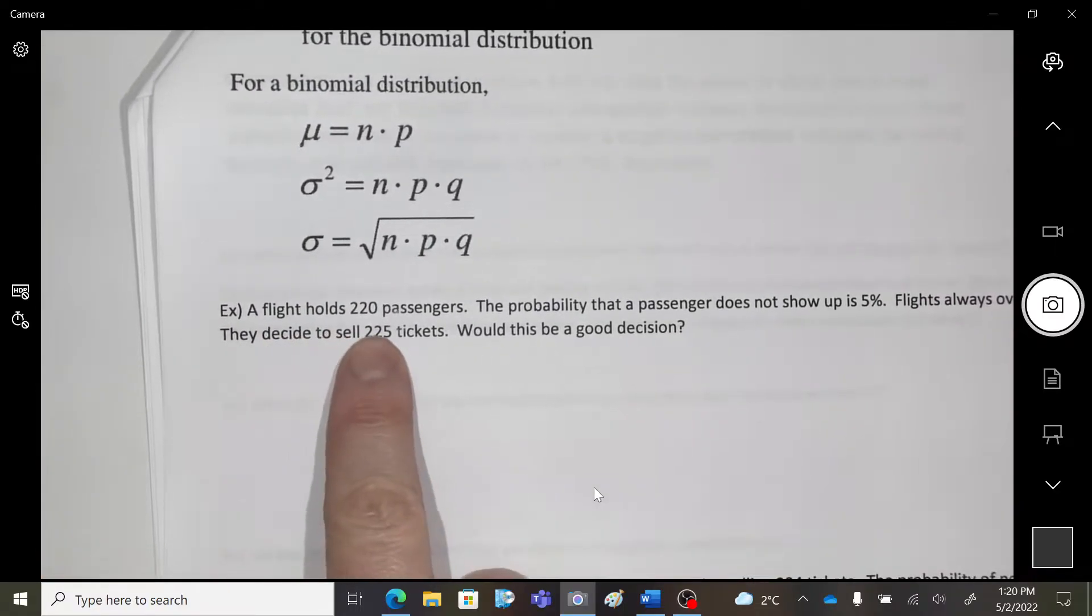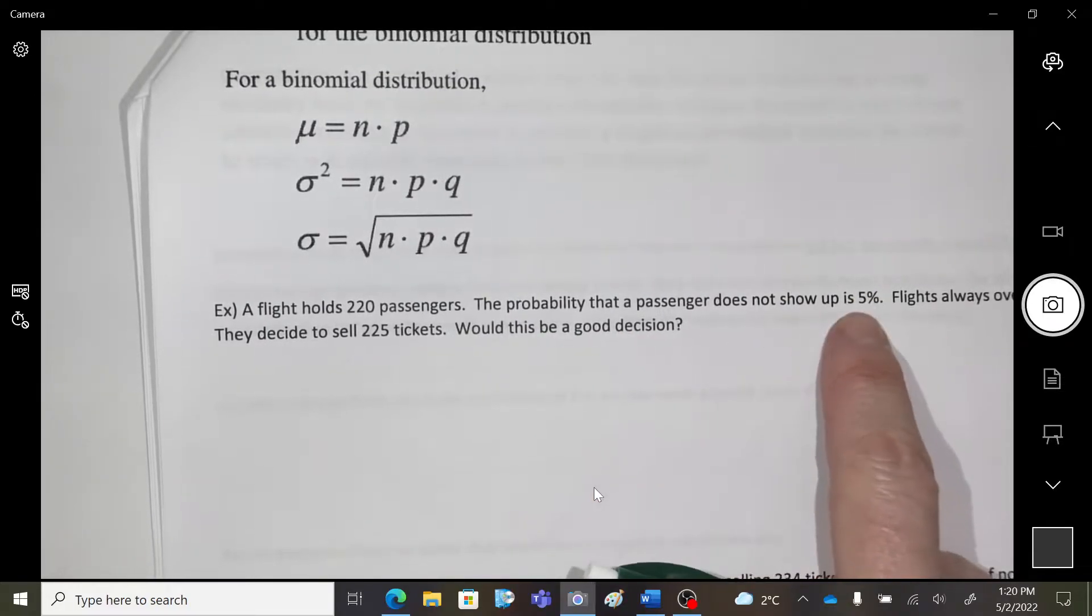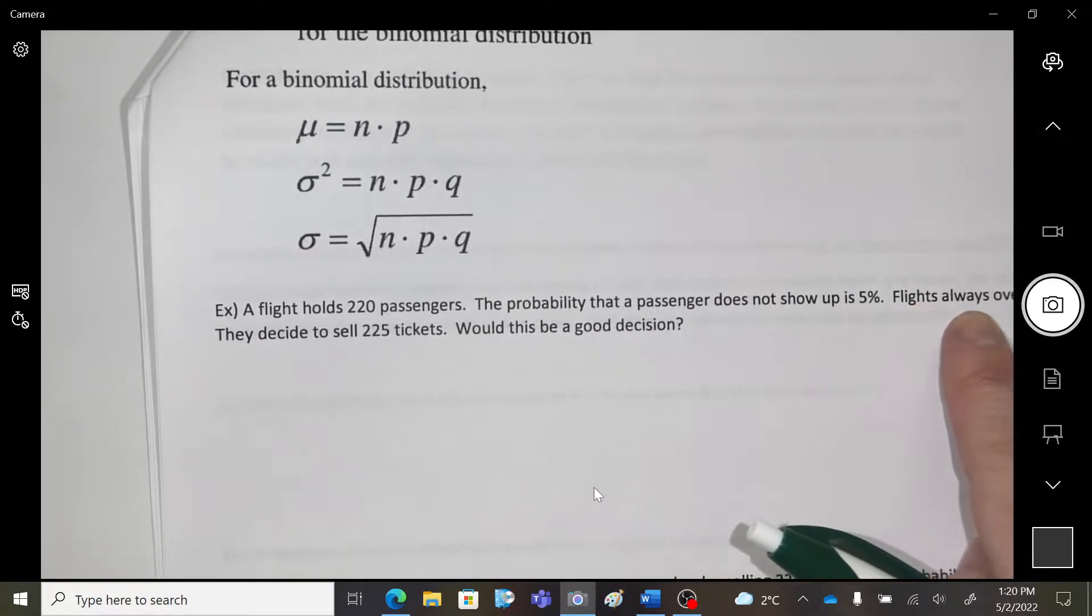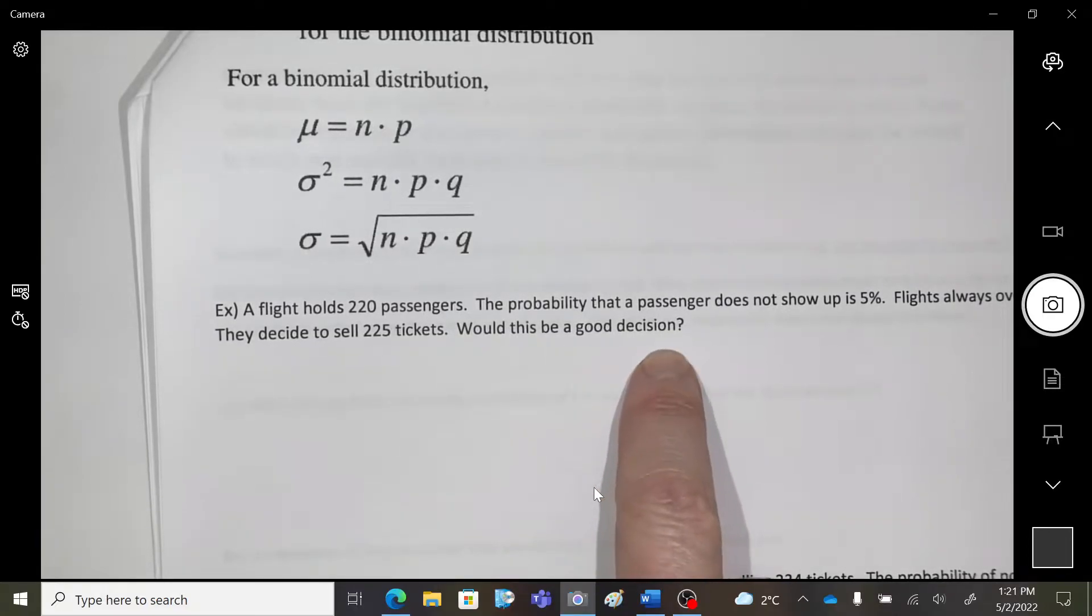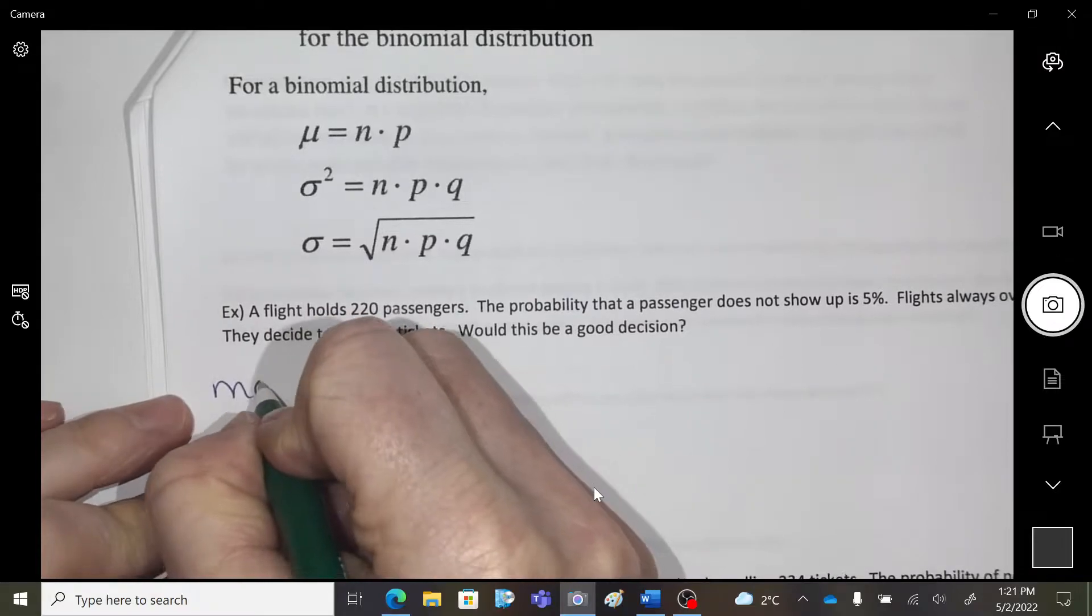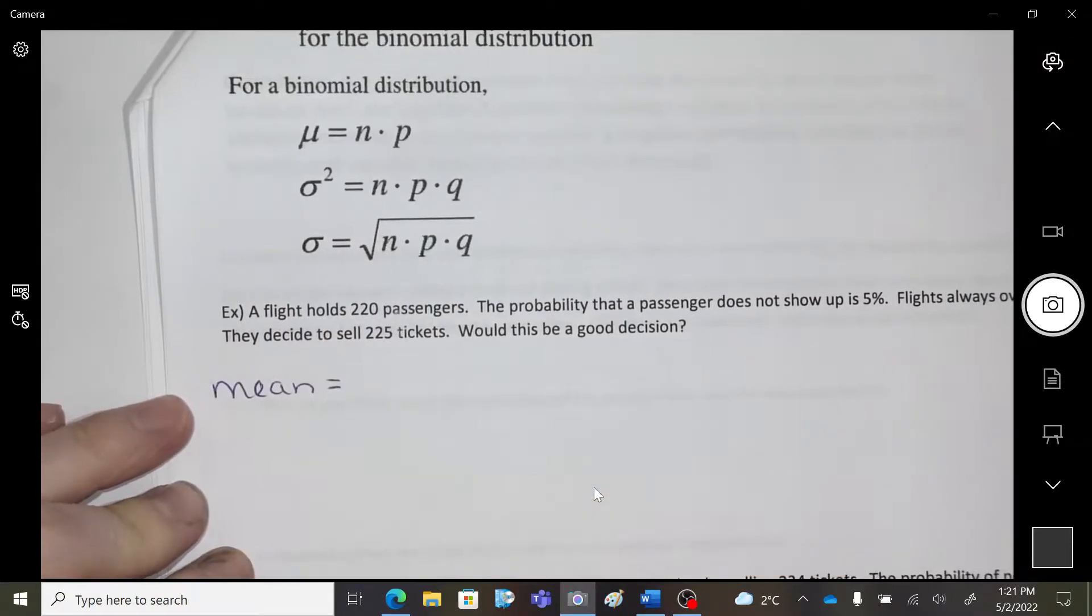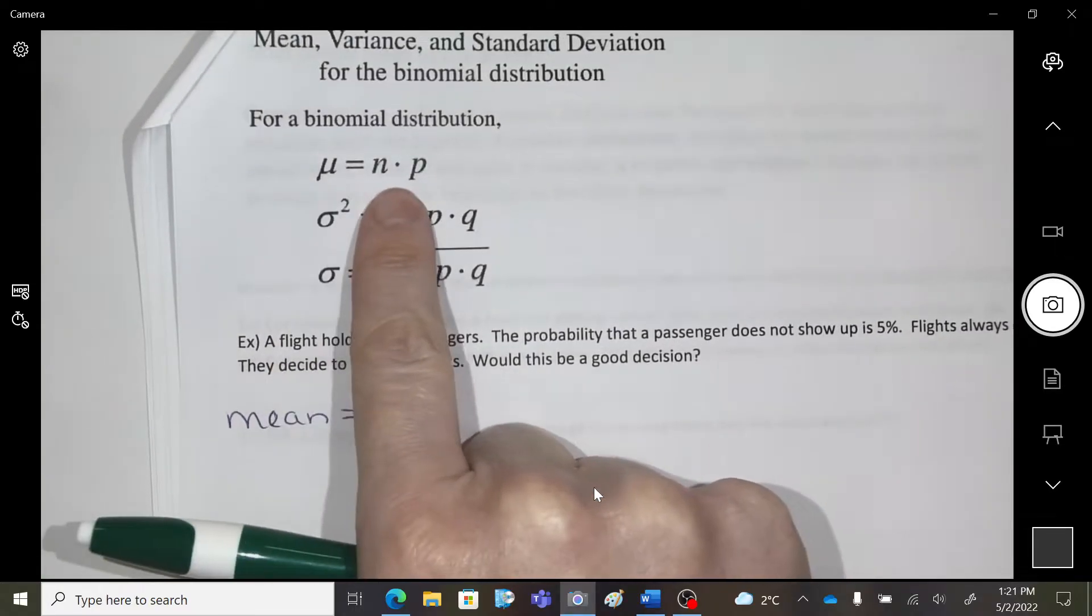Okay, a flight holds 220 passengers. The probability that someone does not show up is 5%. Flights always overbook, and they decide to sell 225 tickets. Would this be a good decision? Okay, so we're going to get the mean. Okay, so this top one is the mean.